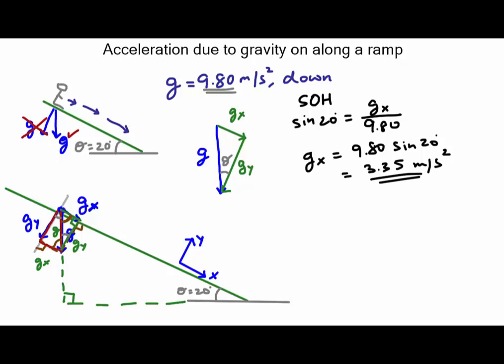Now we've got to look at the picture for our signs. And gx points down the ramp, positive x-axis points down the ramp, so this is a positive value.